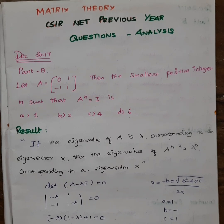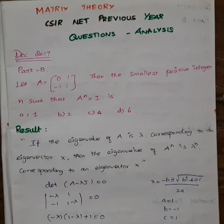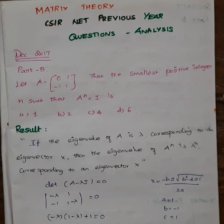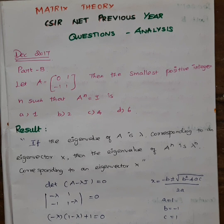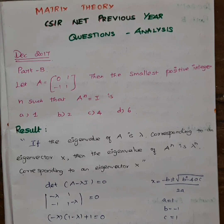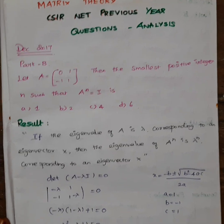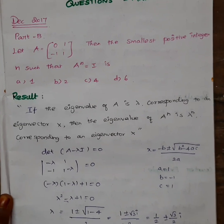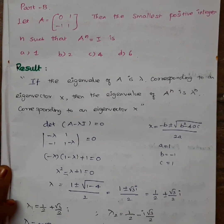We know the result: if the eigenvalue of A is lambda, then the eigenvalue of A^n is lambda^n. This result is all we need. To use this, we first need the characteristic equation: det(A minus lambda·I) equals 0. The main diagonal becomes minus lambda, and we multiply and cross-multiply.